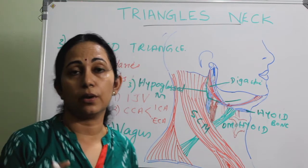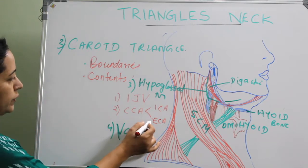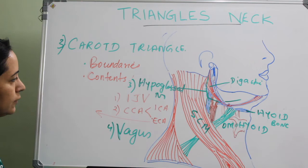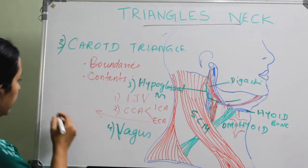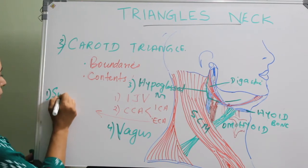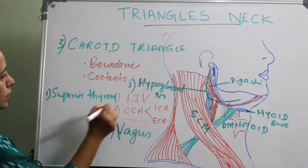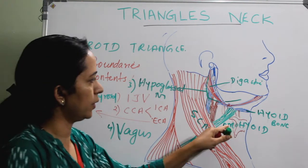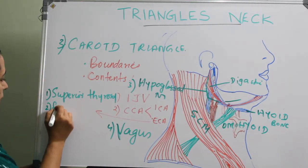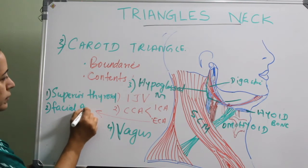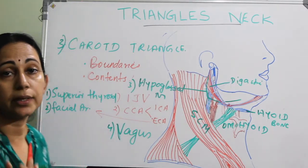There are five branches of the external carotid artery given off in the carotid triangle. For the external carotid: first is the superior thyroid artery — going to the thyroid gland. Second is the facial artery — going to the face. Third is the lingual artery — going to the tongue in the oral cavity.